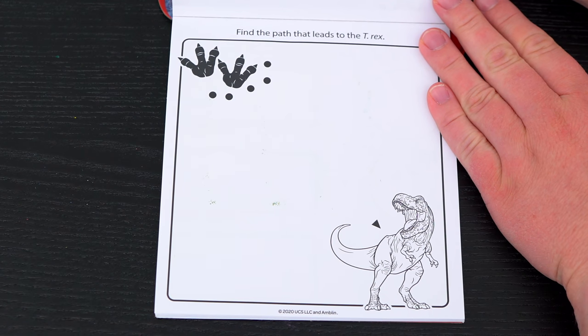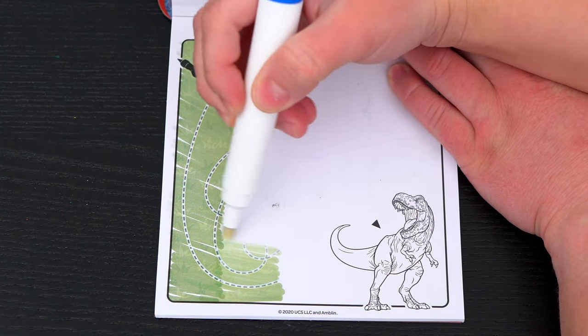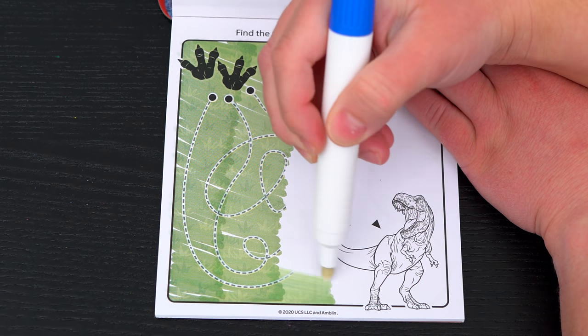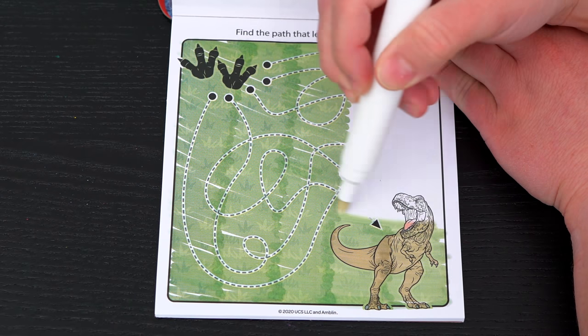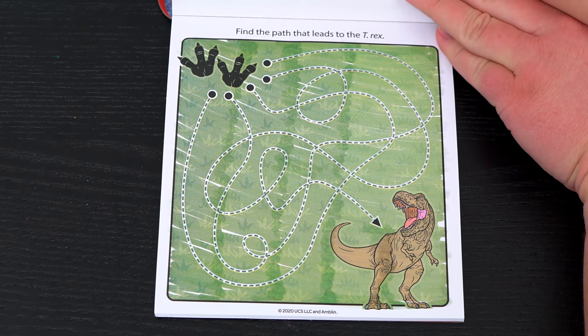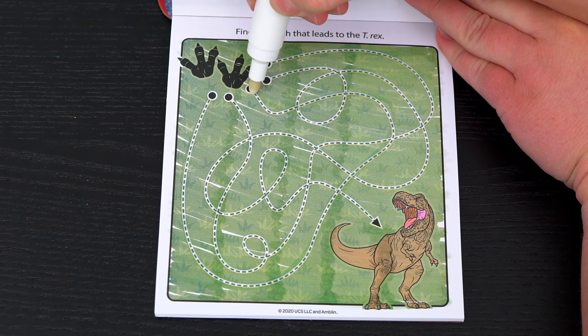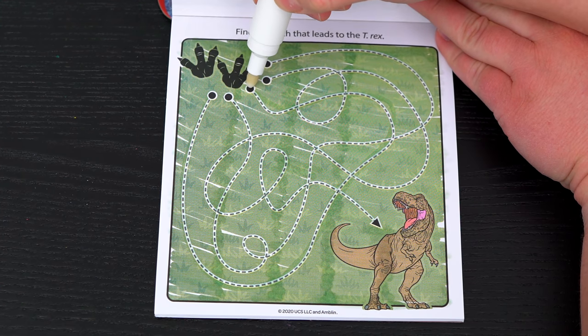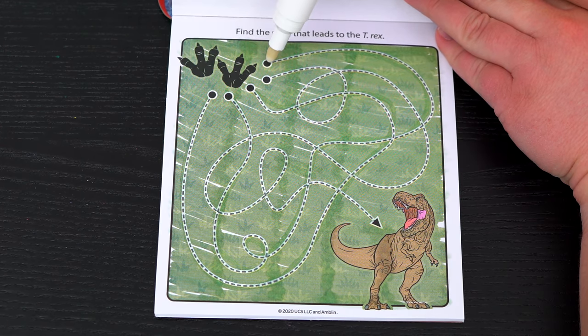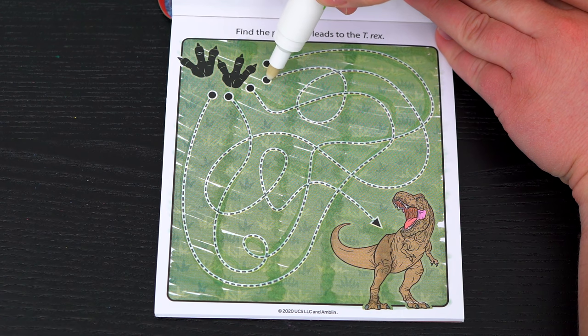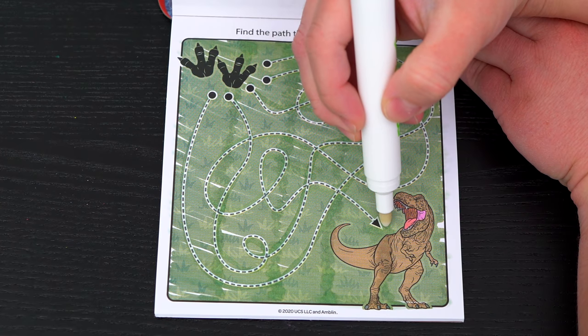It says find the path that leads to the T-Rex! Alright, first let's try this path! Nope, that leads to this middle dot! Next let's try this one! No, that one leads to the top! It must be this dot! Yeah, we found the T-Rex!